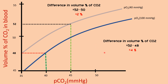This causes the difference to become 52 minus 48, which equals 4%. Compared to the previous value of only 2%, the difference in volume percent of carbon dioxide has doubled. This doubling results in the transport of double the volume of carbon dioxide. Conversely, it also means a doubled pickup of carbon dioxide from the tissues.